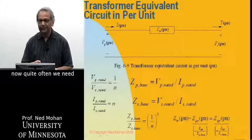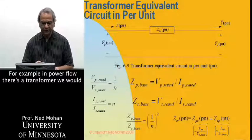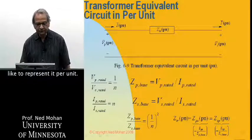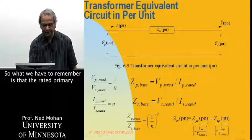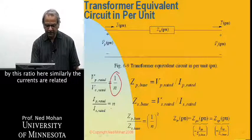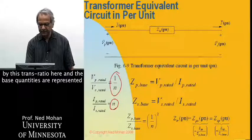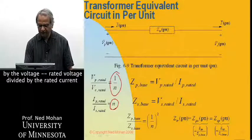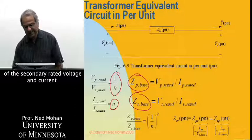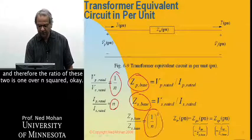Now, quite often, we need to represent these transformers in per unit. For example, in power flow, if there's a transformer, we would like to represent it in per unit. So what we have to remember is that the rated primary and secondary voltage are given by this ratio here. Similarly, the currents are related by the turns ratio here. And the base quantities are represented by the rated voltage divided by the rated current. So that's the base on the primary side, and this is the base on the secondary side in terms of the secondary rated voltage and current. And therefore, the ratio of these two is 1 over N squared.